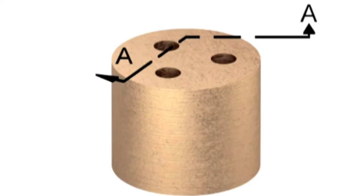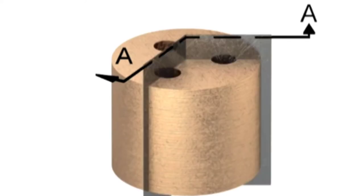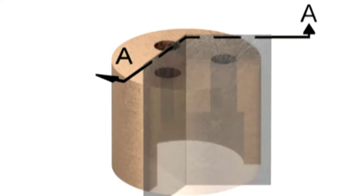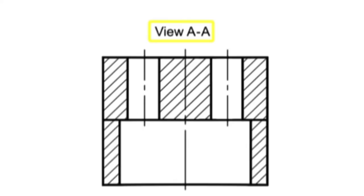Aligned section views occur where the cutting plane bends to pass through specific features of an object, then rotates to a normal vertical or horizontal plane, and is projected to the section view. For circular parts, the cutting plane will almost always pass through the center of the part, and then angle to another feature.